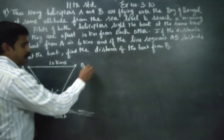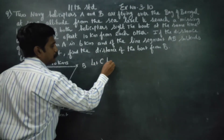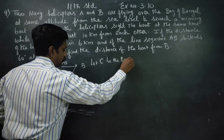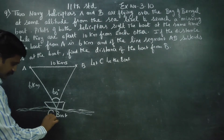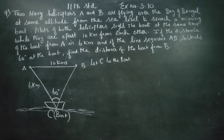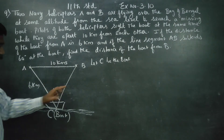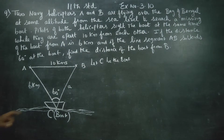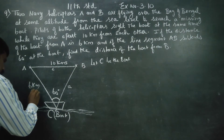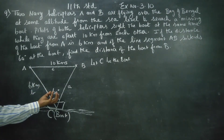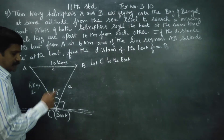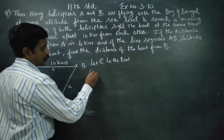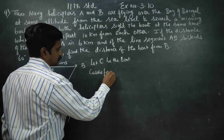Let C be the boat. We label the boat as point C. Above C we assign small letter a, above A we assign small letter a, above B small letter b. Since two sides and the included angle are known, I am going to use the cosine formula. What is the cosine formula?